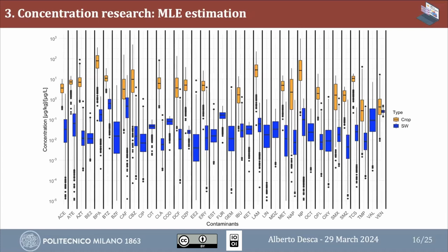Here is a box plot showing the different concentrations generated for each contaminant. For surface water we had 37 out of 37 contaminants, while for crops we had only 22 out of 37 because 15 contaminants needed to be removed. So at this point we had all the data required to apply both procedures.